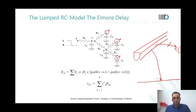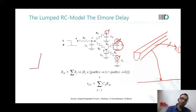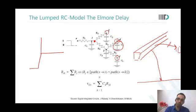In this delay model, wherever there is a turn in the wire or a bifurcation, that is where we also split the model and place a capacitance. Then we have the other resistance coming into picture and so on.